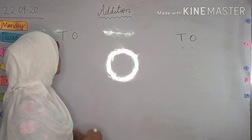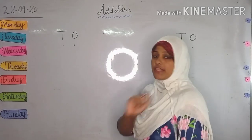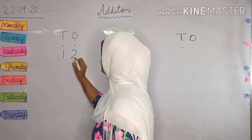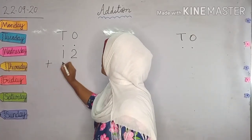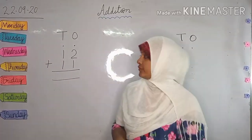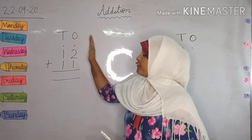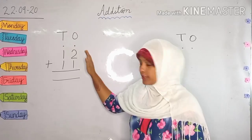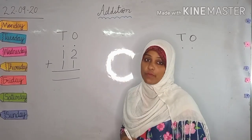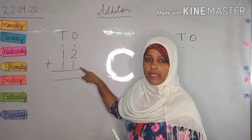Now, for us, this is the place value — 10s and 1s. Here I am going to write two numbers: 12 plus 11. Now, as you can see, this is the place value, 10s and 1s. Whenever we are doing two digit addition, we first come to the numbers which are below the 1s family. Can you tell me which numbers are here below the 1s family? Yes, number 2 and number 1.